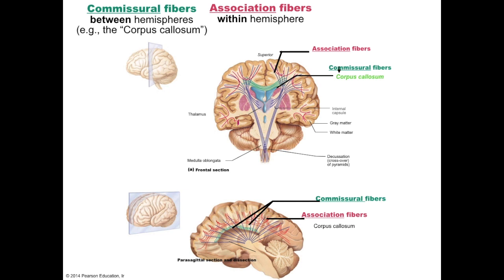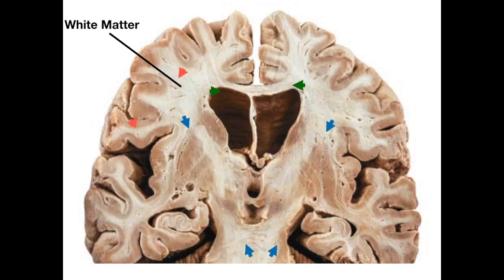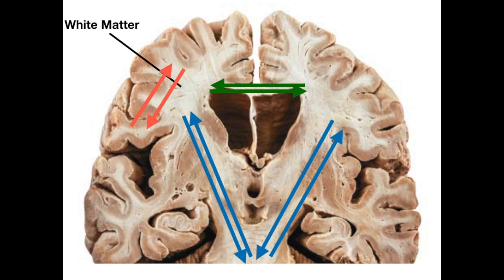The second type of tracts are association fibers, which carry information from one brain region to the next within the same hemisphere. These brain regions are highly specialized but deeply connected to other specialized regions by association fibers, allowing complex higher-order processing. Projection fibers are the connections between higher and lower brain centers — axons bring information from lower brain regions and the spinal cord for higher-order processing, and then decisions and commands are sent down projection fibers to lower areas to execute those commands.